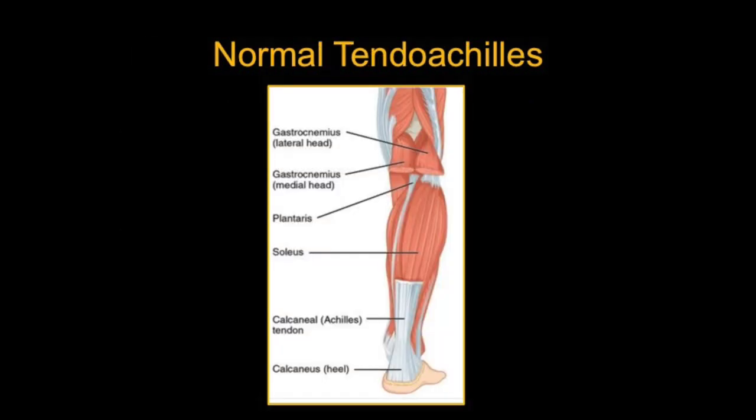This pictorial diagram shows the gastrocnemius heads and the soleus, how they form the Achilles tendon attaching to the heel, and we see the long tendon of the plantaris going along with a separate attachment anterior to the Achilles attachment at the heel.